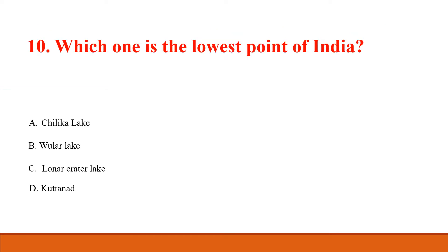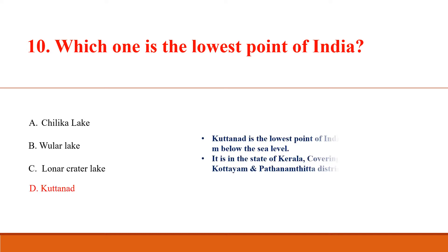Which one is the lowest point of India? Answer D: Kuttanad. Kuttanad is the lowest point of India at an elevation of 2.2 meters below sea level. It is in the state of Kerala, covering the Alappuzha, Kottayam, and Pathanamthitta districts.